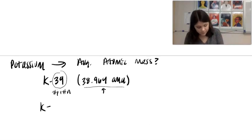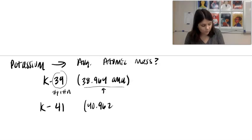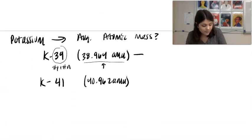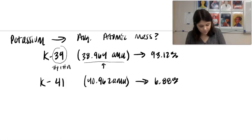Then the next one is potassium-41. Its value is 40.962 AMU. So the percent abundance for potassium-39 is 93.12%. And then for 41, it's 6.88%. So try this problem, pause the video, see how you do.